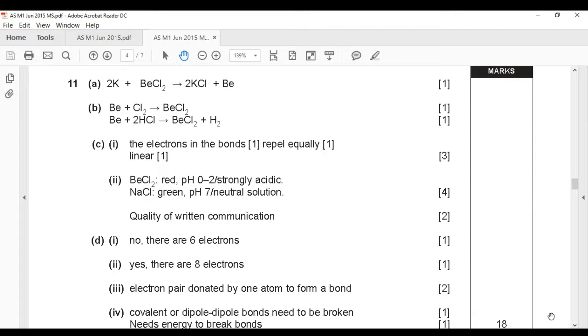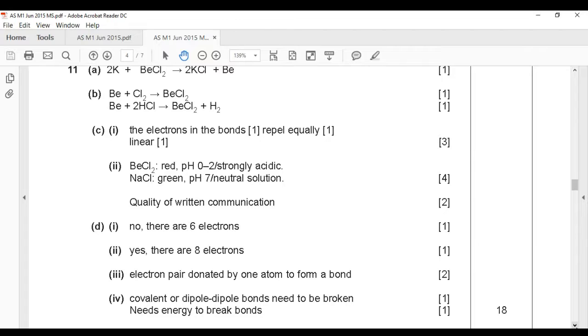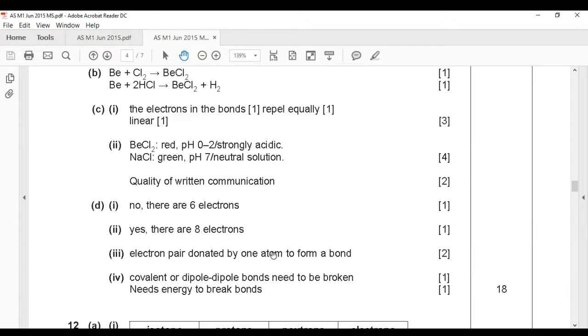So answers are: no, beryllium does not obey the octet rule, there are six electrons in the outer shell. Chlorine does because there are eight electrons in the outer shell. Remember a coordinate bond is a shared pair of electrons with both electrons supplied by one atom.